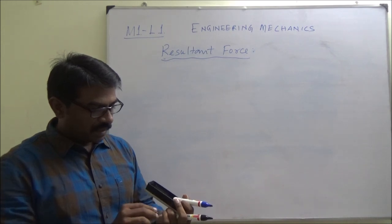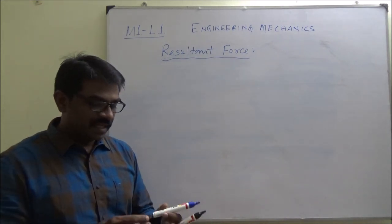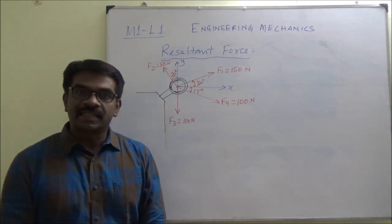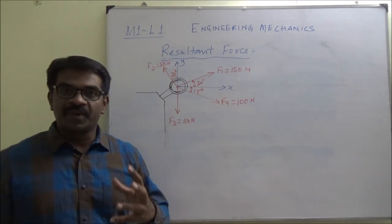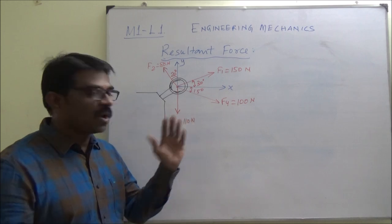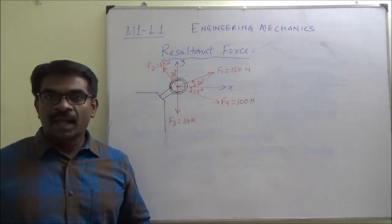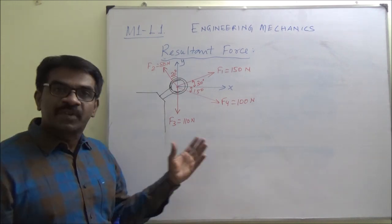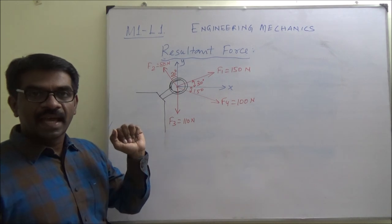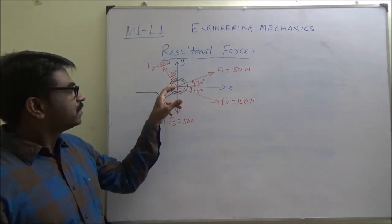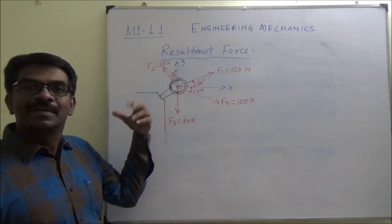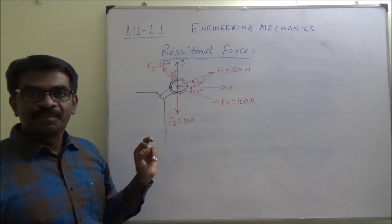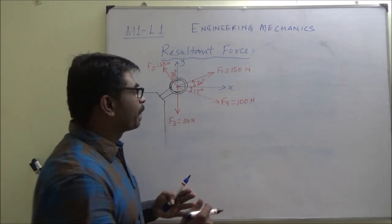That single force produces the same effect as these four forces producing on that particle. First we will find out the resultant force acting on a particle, then we will go to finding out unknown forces using equilibrium equations. Let us solve this problem and find out the resultant force. First we have to draw the free body diagram — I will discuss what a free body diagram is and how to put all the forces in a free body diagram after solving this problem.